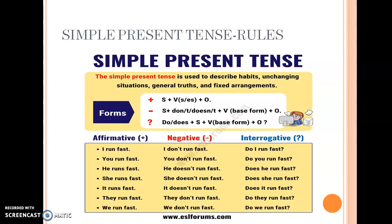In simple present tense you use the first form of the verb. For a positive sentence: subject plus first form of verb. For a negative sentence: subject plus don't or doesn't plus first form of verb. For an interrogative sentence, the helping verb comes in the beginning — do or does — so: do or does plus subject plus first form of verb. Read the examples: I run fast. I don't run fast. Do I run fast?